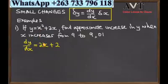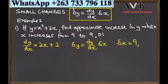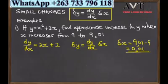This becomes 2x + 2 after differentiation. Therefore we need to find the change in x, so the change in x equals 9.01 minus 9, which means this equals 0.01.